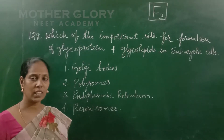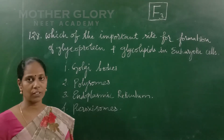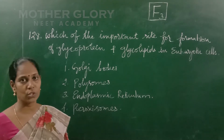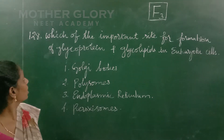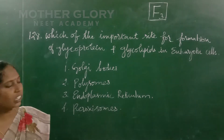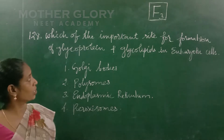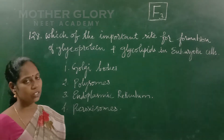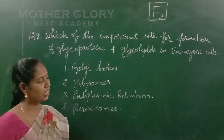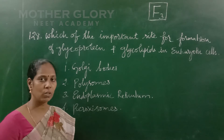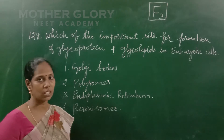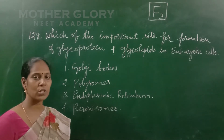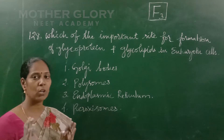Next question comes from the cellulose unit of glyco. We have a very simple answer to our question. Question number 128: Which is the important site for formation of glycoproteins and glycolipids in eukaryotic cells? In eukaryotic cells, glycoproteins and glycolipids form at an important site.